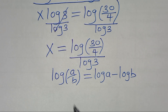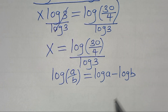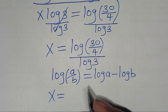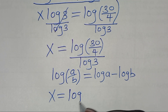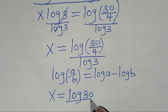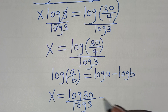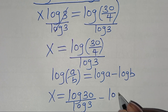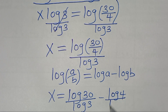Applying this logarithm property, x is equal to log 30 over log 3, subtract log 4 over log 3.